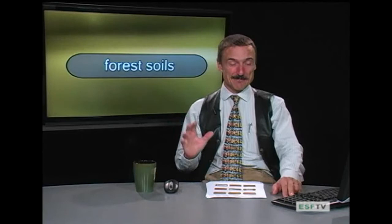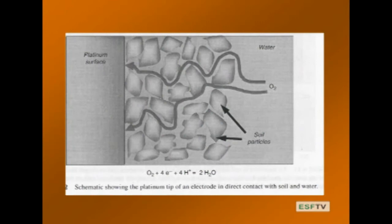ODR is measured using a platinum surface: oxygen diffuses to the platinum and the change in voltage across the surface is directly related to the diffusion rate. It measures the rate of movement of oxygen through the system until it hits the surface. Doing this in the field is tricky — as are most measurements in the field.